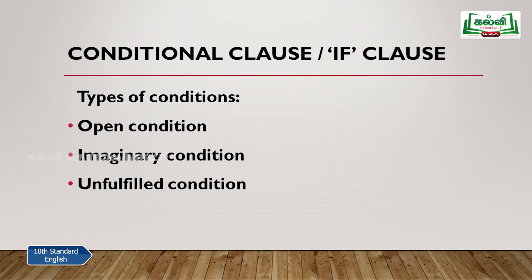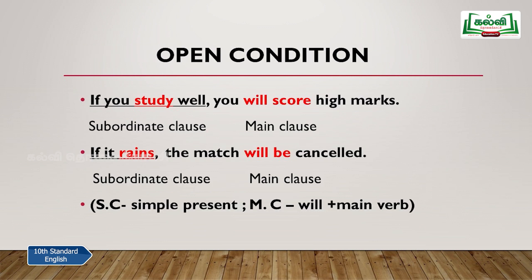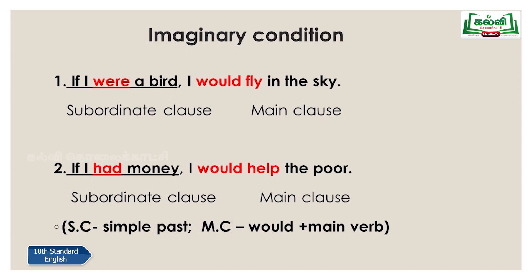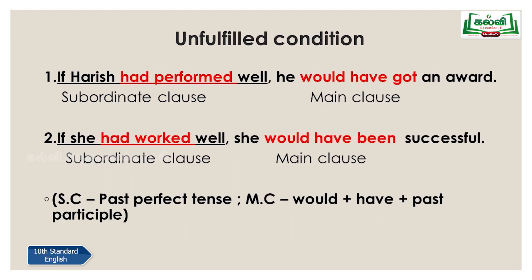To summarize: in the open condition, the if-clause (subordinate) uses simple present; the main clause uses 'will + main verb'. In the imaginary condition, the subordinate clause uses simple past (were/had); the main clause uses 'would + main verb'. In the unfulfilled condition, the subordinate clause uses past perfect; the main clause uses 'would + have + past participle'. Thank you, children — I think you have learned very well. Grammar is very easy. Enjoy learning. Thank you.